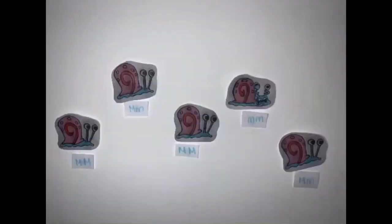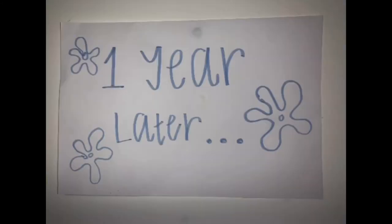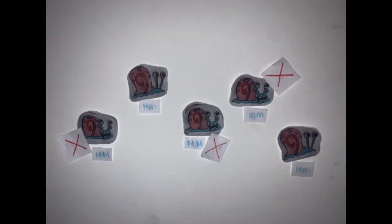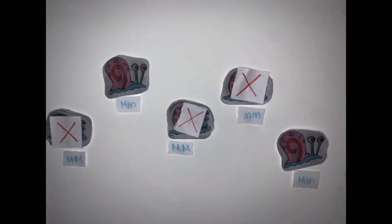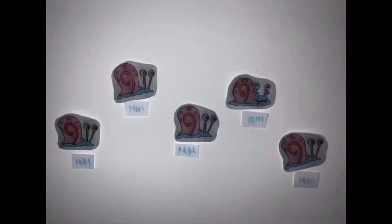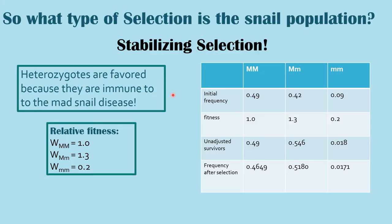Wait — didn't I say that the heterozygous was immune to the disease? So could there be selection here? As you can see, the heterozygous trait is actually going to be favored in this population. Since heterozygous is favored, we're going to get stabilizing selection.